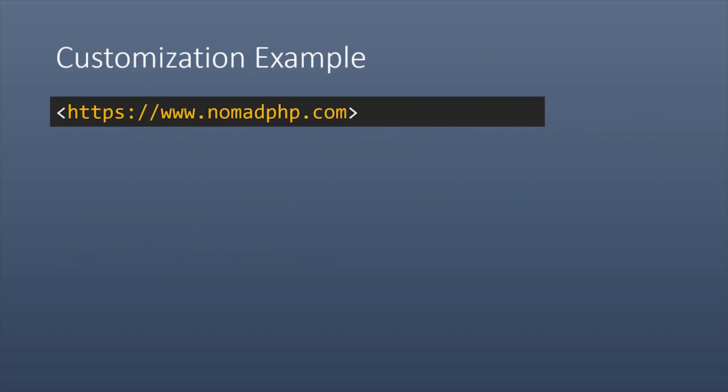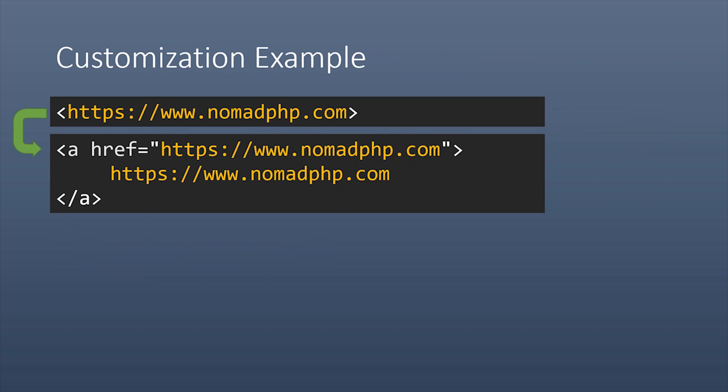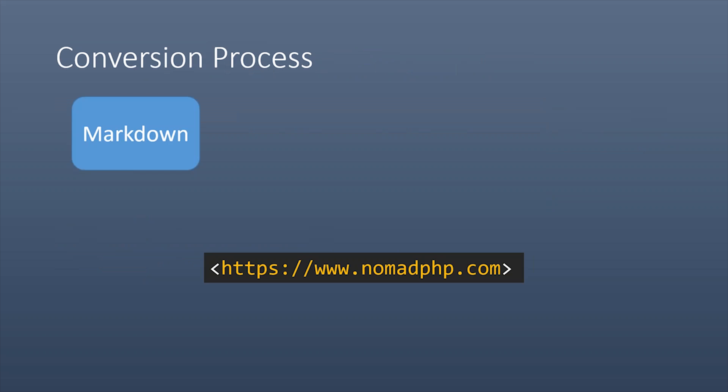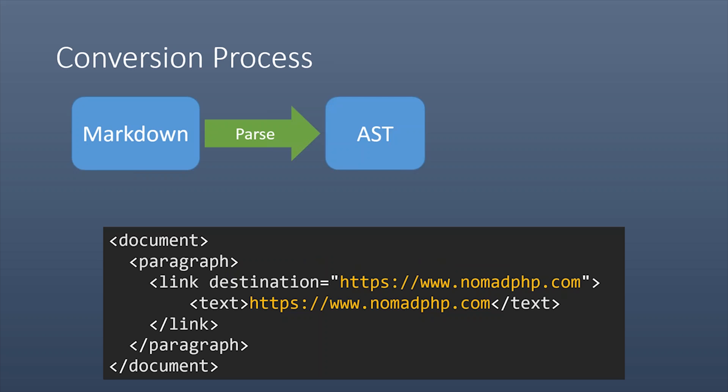Let's take a look at an example. Here's standard Markdown using the auto-linking syntax — a URL with a less-than sign on the left and greater-than sign on the right — which virtually every Markdown parser converts into an A tag with an href and text label. Now let me show you how our engine does this behind the scenes. We start with the Markdown input and run it through a bunch of sub-parsers looking for things like link tags, bold tags, and lists.